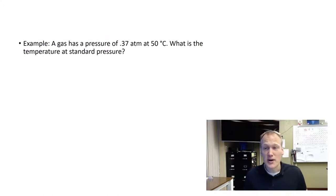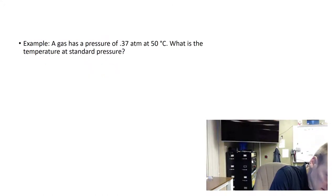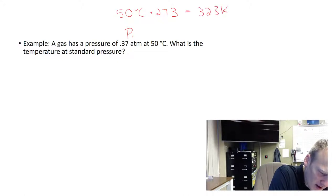This says a gas has a pressure of 0.37 atmospheres, so that's a pressure, and it's at 50 degrees Celsius. But we cannot use Celsius, so we're going to take that 50 degrees Celsius and we're going to add 273, which will get us to 323 Kelvin, and that will be our T1.